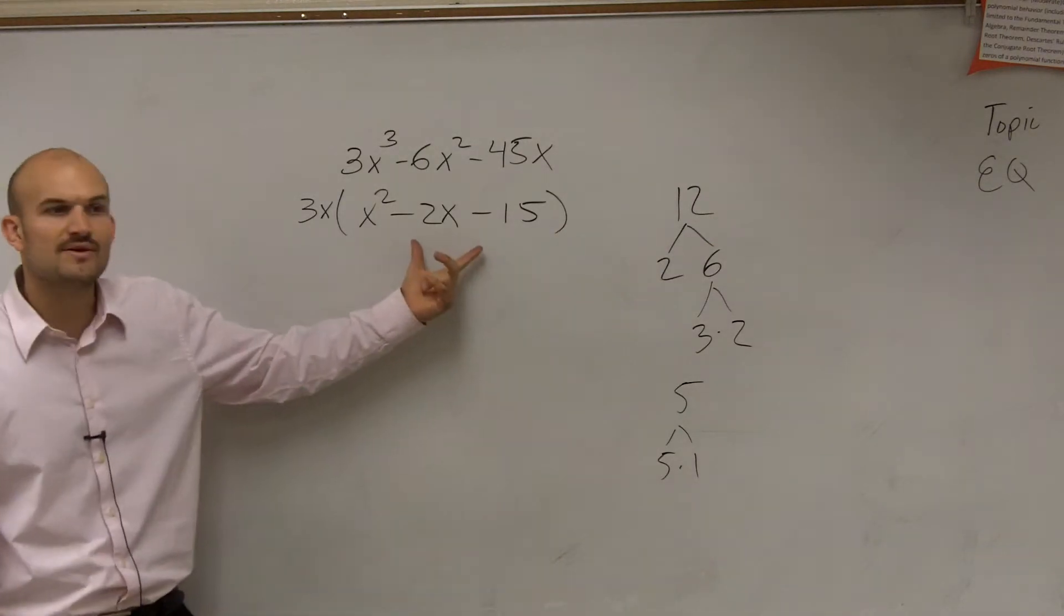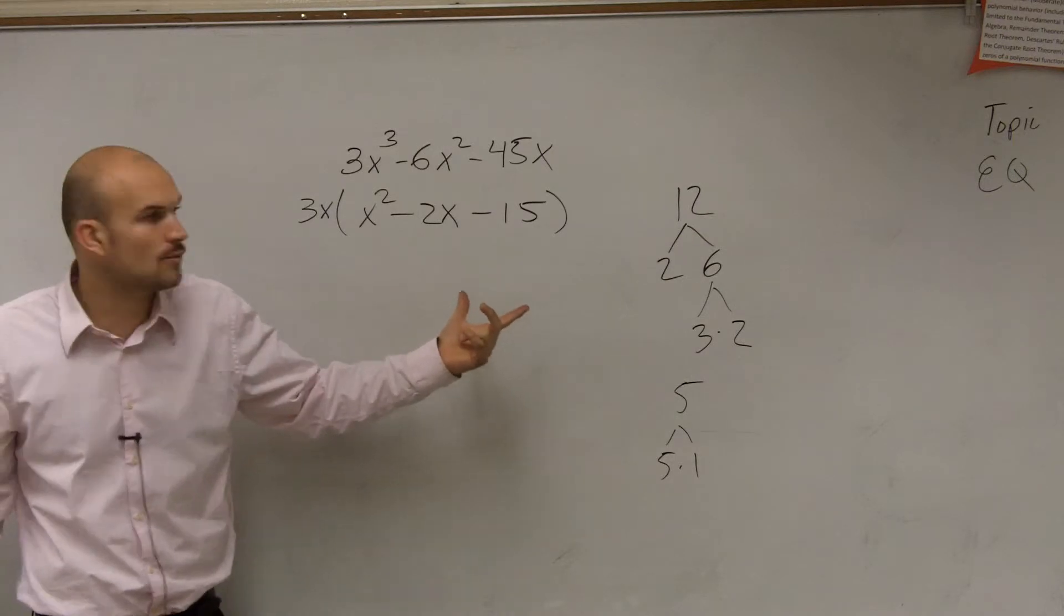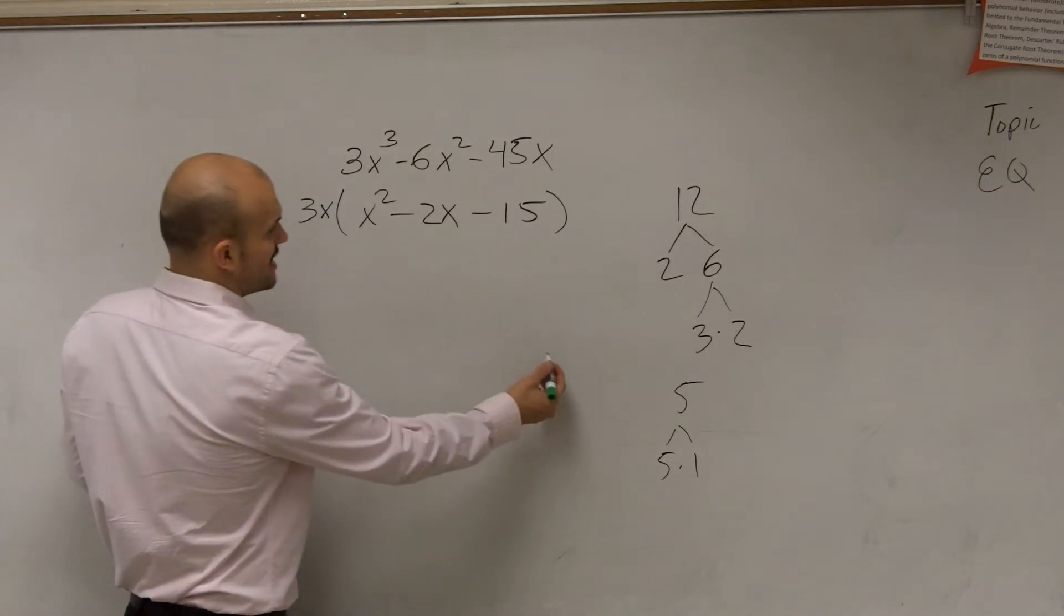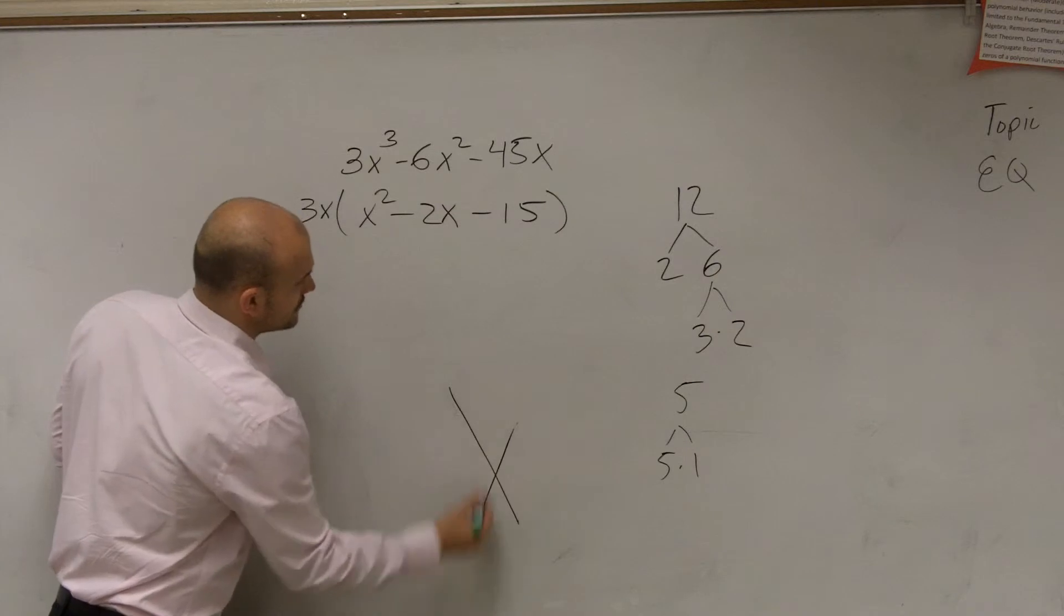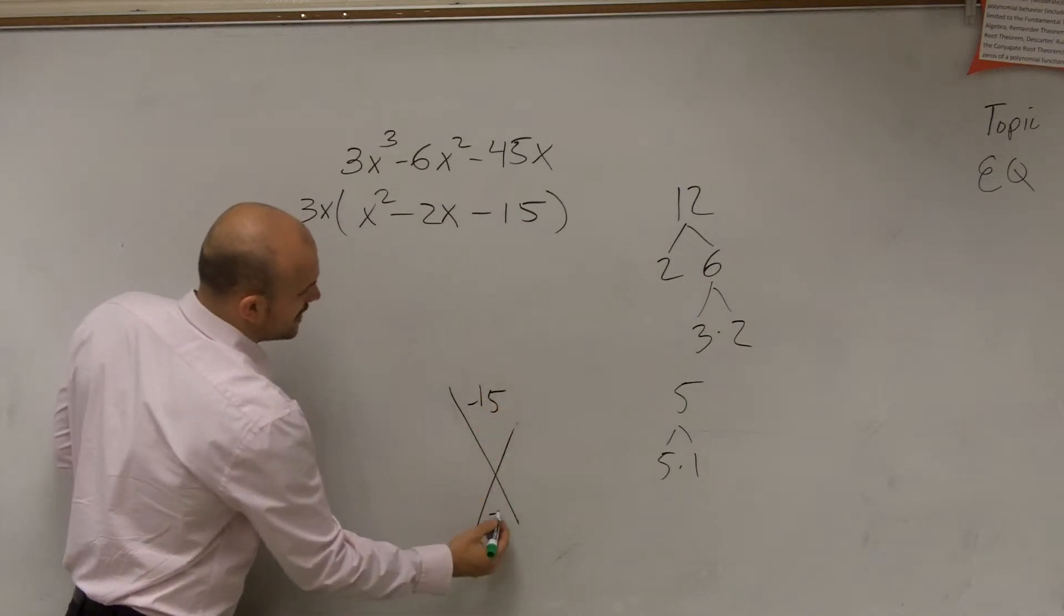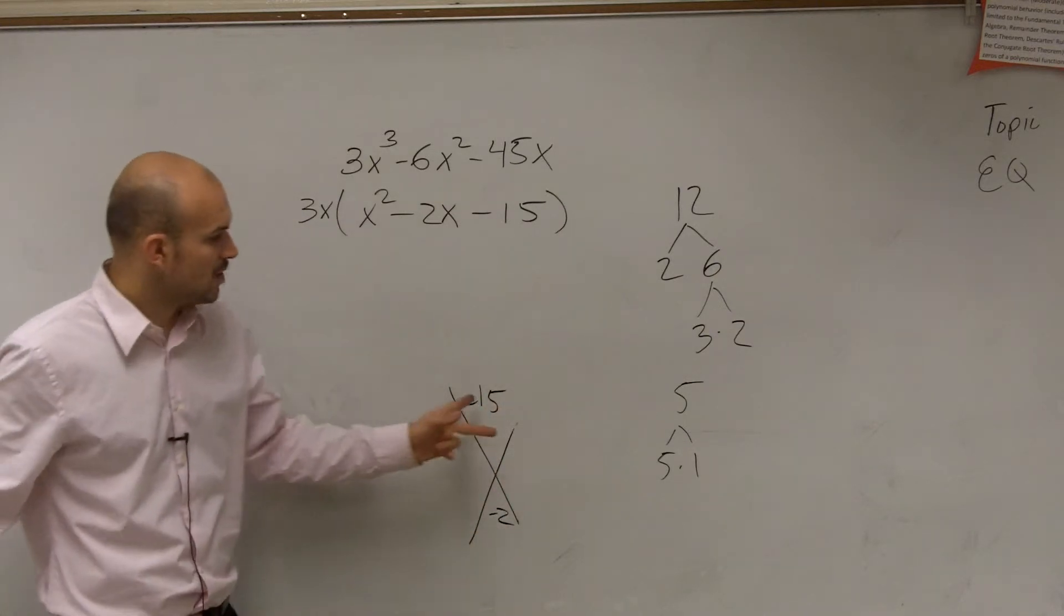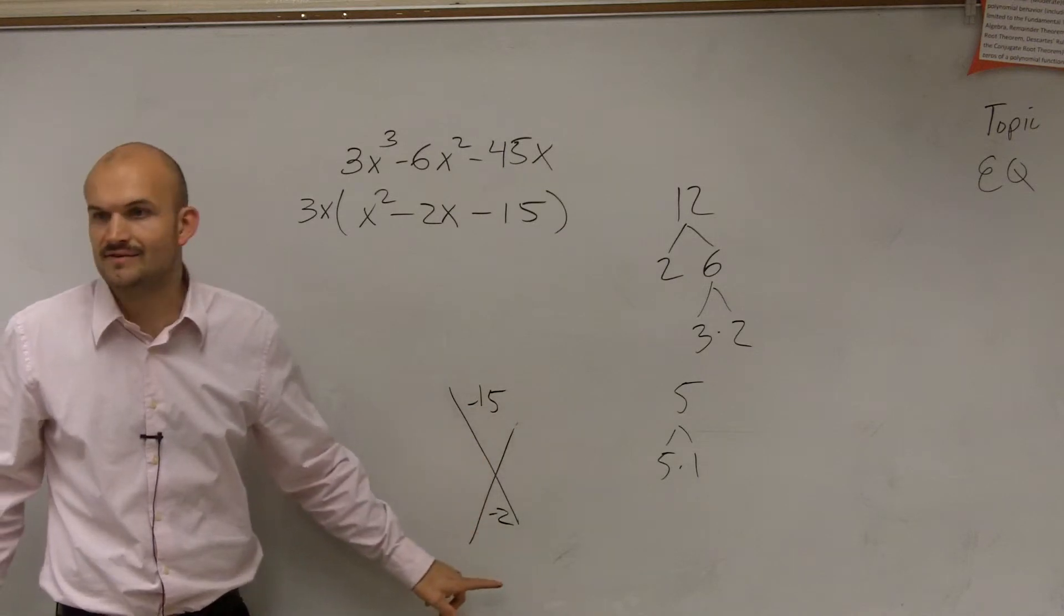So we look at this. Can we factor this? Well, I don't know. What were our techniques to factor this? Remember, we could take the points negative 15 and negative 2. What two numbers multiply to give us negative 15, but add to give us negative 2?